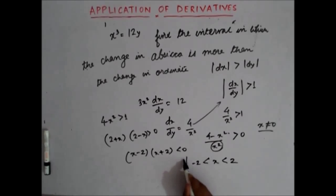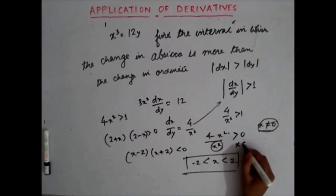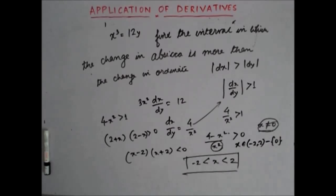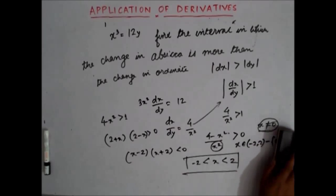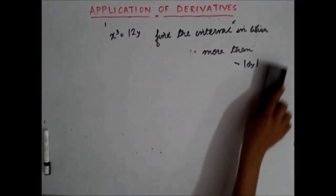So is this the solution? Can x take all integral values between minus 2 and 2? The answer is no because first condition what I have got is x should not be equal to 0. So my final answer should be x belongs to minus 2 to 2 minus 0. So this is my answer. So this was all about the first subtopic that is dy by dx as a rate measurer.